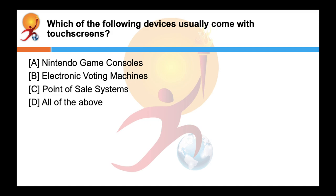Which of the following devices usually come with a touch screen? The correct answer is D all of the above. A touch screen is basically an input device which is present on top of an electronic visual display. It is found in devices like Nintendo game consoles, EVMs, personal computers and POS.